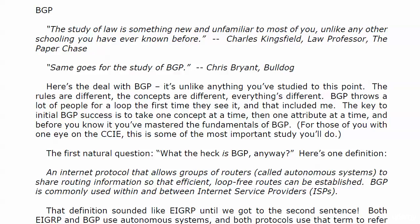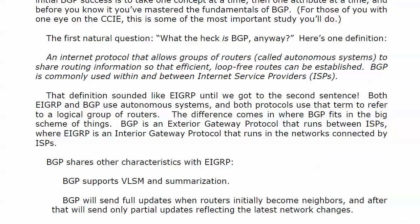The first natural question is: if BGP is so different — if it's not really like EIGRP or OSPF — what the heck is it? Here's one definition: an internet protocol that allows groups of routers called autonomous systems to share routing information so that efficient, loop-free routes can be established. BGP is commonly used within and between internet service providers, the ISPs. That definition started sounding a little bit like EIGRP — as soon as you hear autonomous systems, you think EIGRP. Both EIGRP and BGP use autonomous systems, and we'll be typing in AS numbers in our BGP labs just as we did in our EIGRP labs. Both protocols use that term to refer to a logical group of routers. The difference is really where BGP fits in the big scheme of things: BGP is an exterior gateway protocol that runs between ISPs, where EIGRP is an interior gateway protocol that runs in the networks connected by the ISPs.